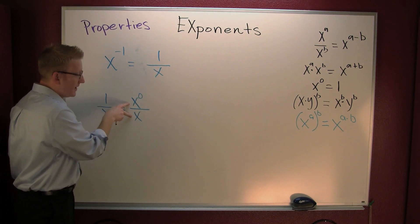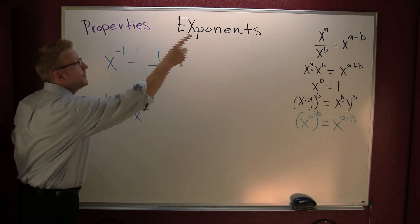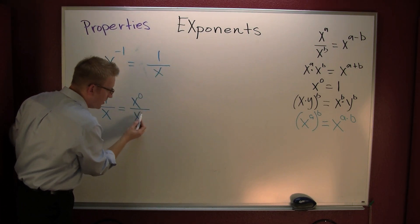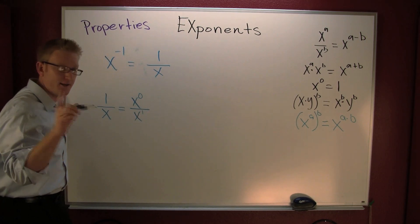Now what do I have? I have the same base and I'm dividing, so what am I gonna do to their exponent? I'm gonna subtract. If it's not written there, it's assumed to be a one.